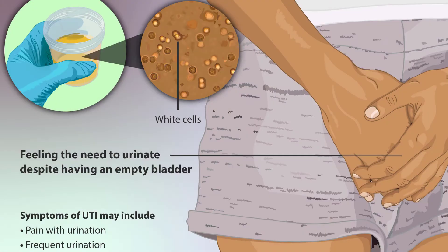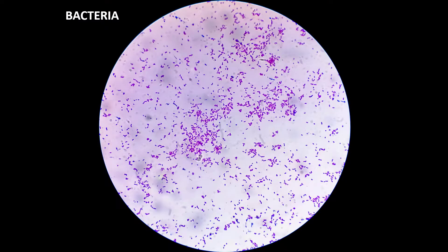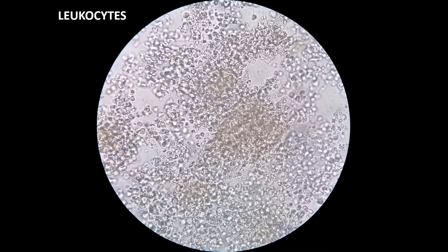In a perfect world, this is how a urinary tract infection will play out. The patient comes in complaining of painful urination, frequency, urgency, with or without fever. So then we decide to order a urinalysis in order to look for signs of infection, meaning bacteria and inflammation, meaning leukocytes.